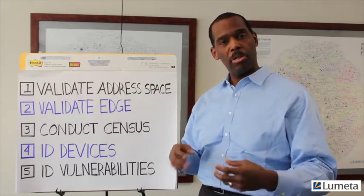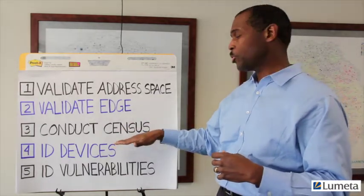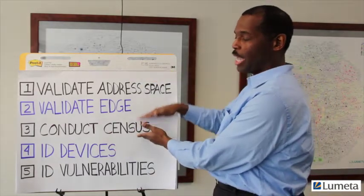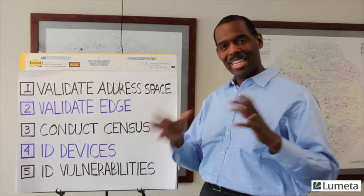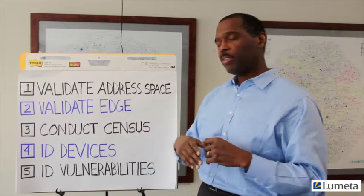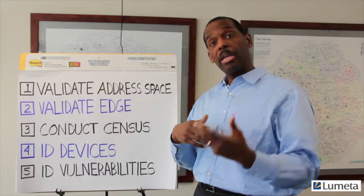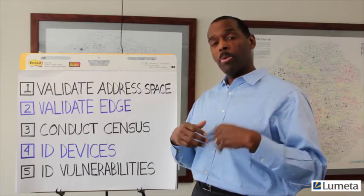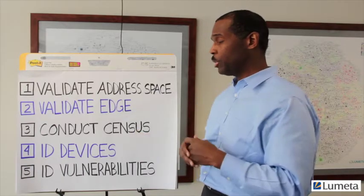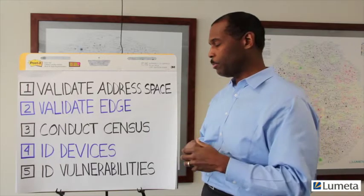Step four involves identifying what operating system is running on devices and what the hardware platform is. Most vulnerability assessments start with step four and don't undergo this baselining activity, which is the starting point of that ten to twenty percent gap in knowledge. At the device identification phase, you fingerprint those devices. In Lumetta's case, we're actually able to do that without an agent or client being installed on the devices, giving the organization a very holistic view of what each device is and what operating system is running on it.